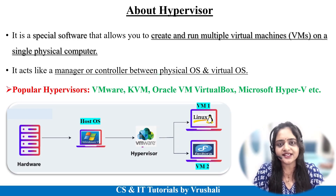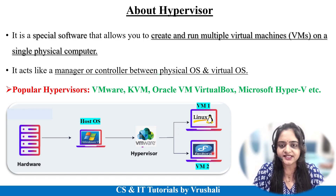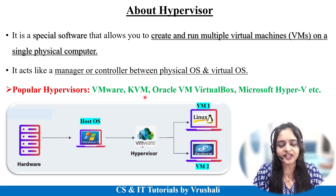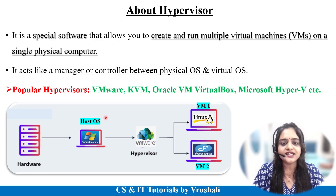Now, what exactly is a hypervisor? Here in this diagram, there is your original physical device with Windows OS installed — this is the host operating system. On Windows OS you can install multiple operating systems as per user requirement, such as a Linux virtual machine and a Fedora virtual machine, all handled by the hypervisor. Popular hypervisors in the market include VMware, KVM (Kernel Virtual Machine), Oracle VirtualBox, and Microsoft Hyper-V. These hypervisors work like a manager or controller between your physical operating system and virtual operating systems, creating and running multiple virtual machines on a single physical computer.